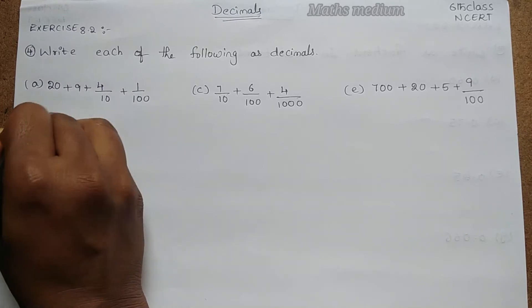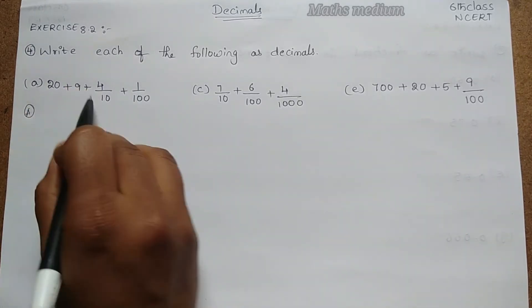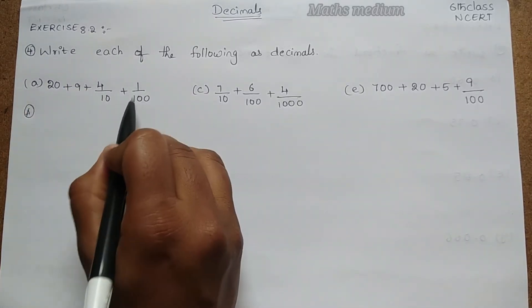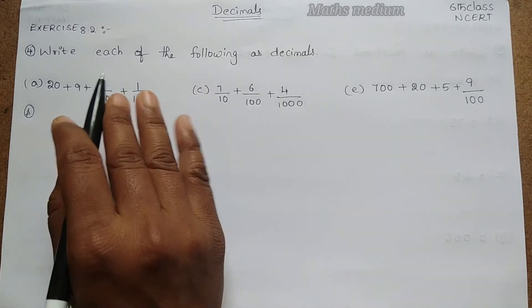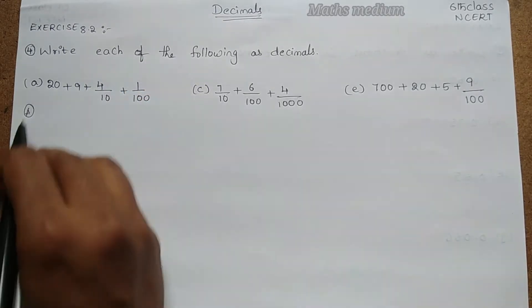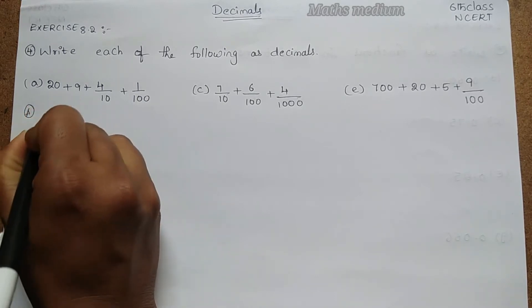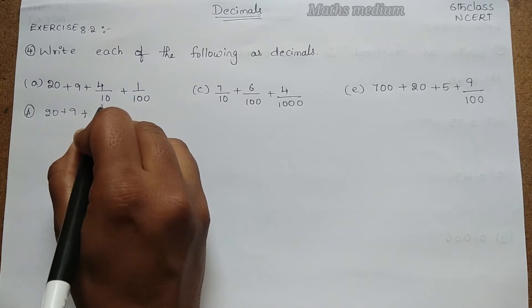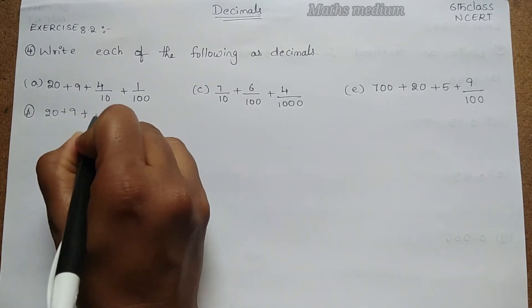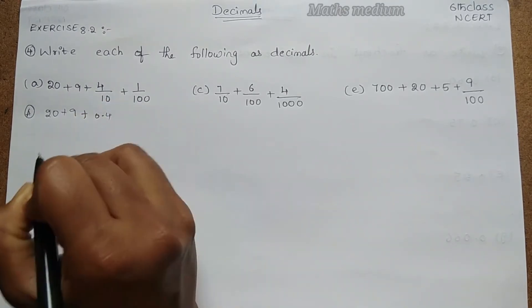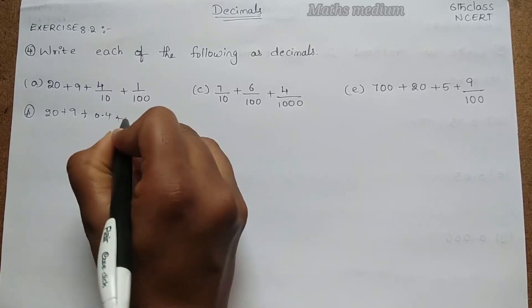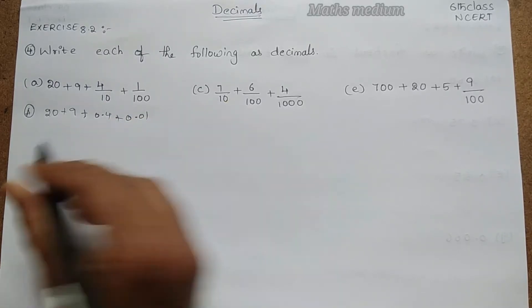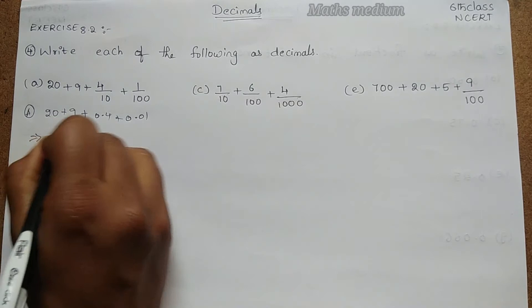Let's start with the answer with (a). So here it is 20 + 9 + 4/10 + 1/100. We have to convert this into a decimal form, similarly (c) and (e) also. Let's start with this: 20 + 9, plus here 4/10 means it is 0.4, plus 1/100 is 0.01.